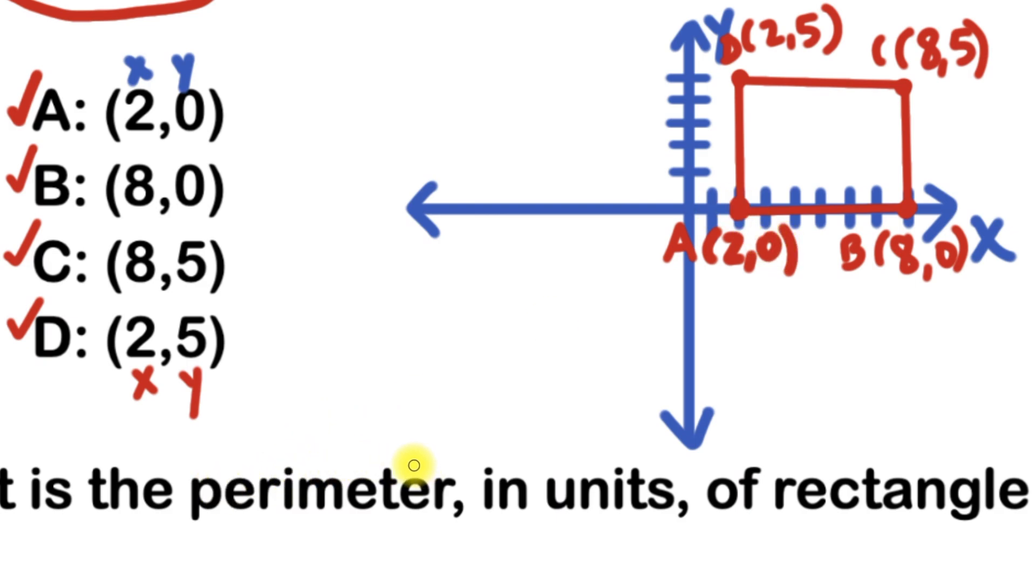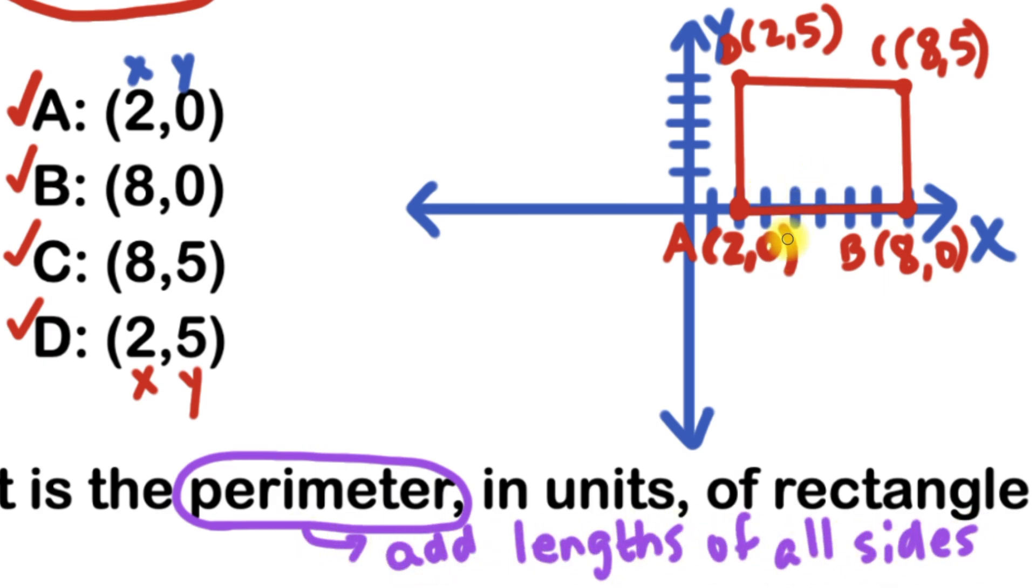And here's where it's going to become really useful. Remember that we're looking for the perimeter of this rectangle. Now that we have it drawn, finding the perimeter and the length of the sides will be a lot easier. And how exactly do you find the perimeter of a rectangle? Well, the perimeter is the same for all shapes. You just find it by adding all the sides. So the question is, how long is each side here?